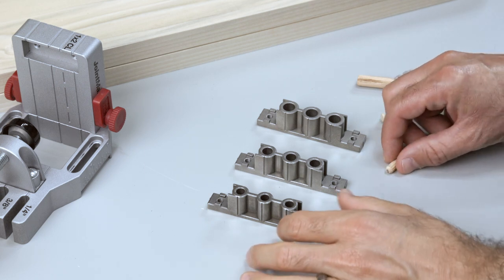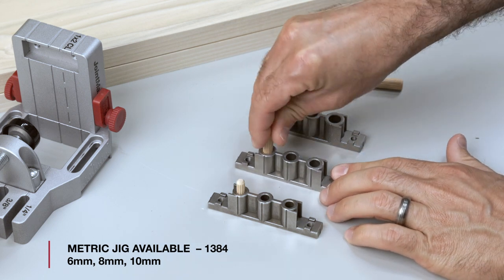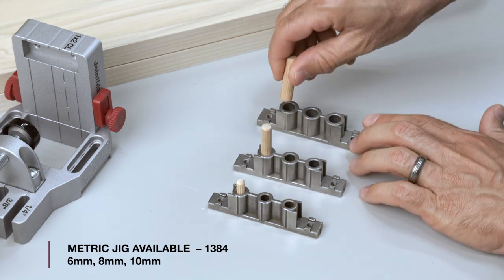The Joint Master comes with three drill blocks and is capable of creating joints using the most common dowel pin sizes: quarter inch, five sixteenths inch, and three eighths inch.